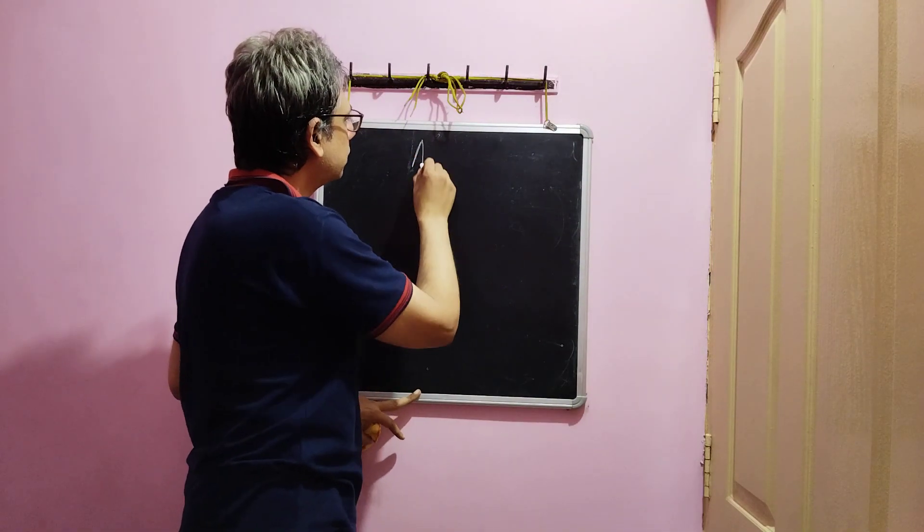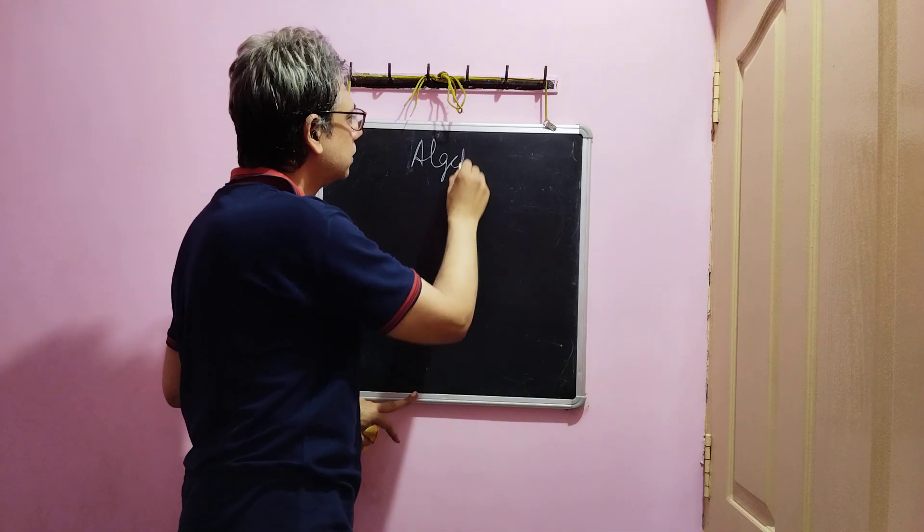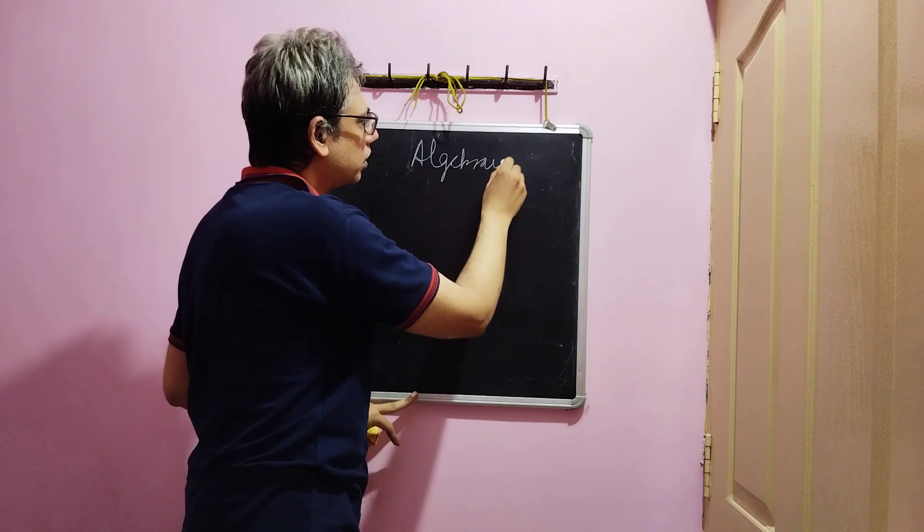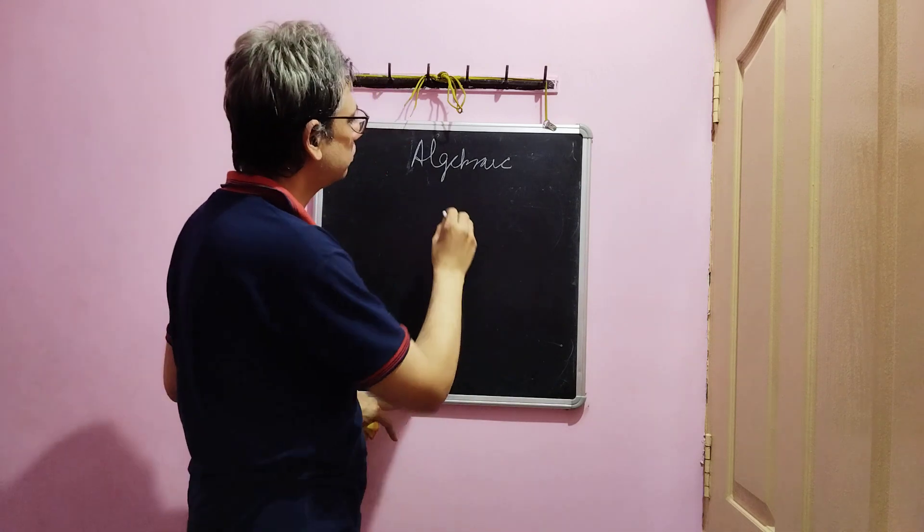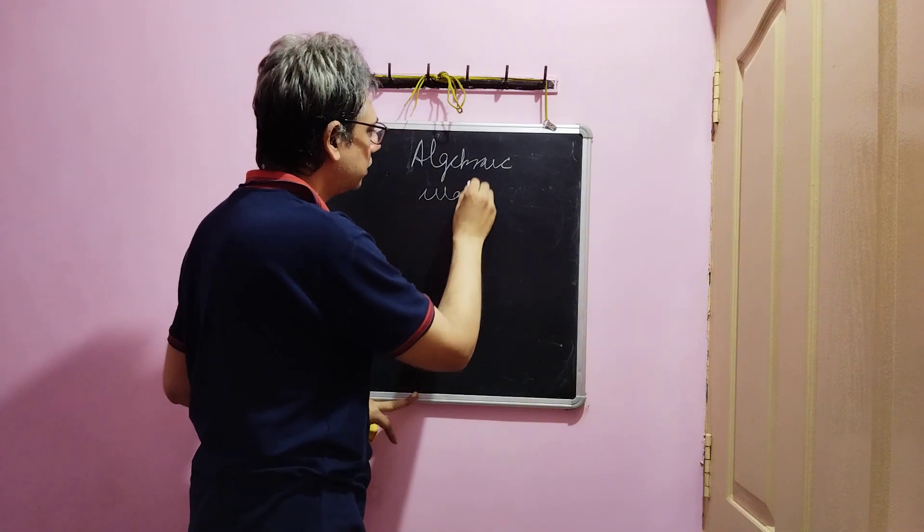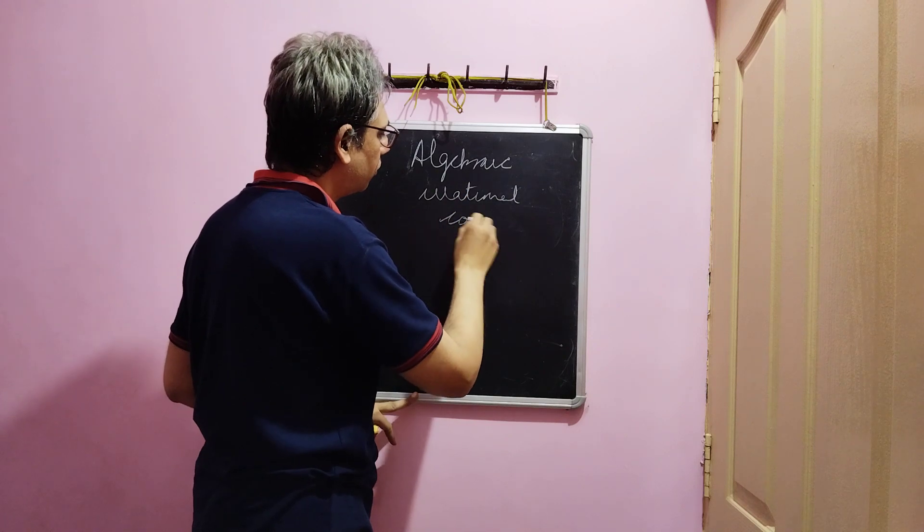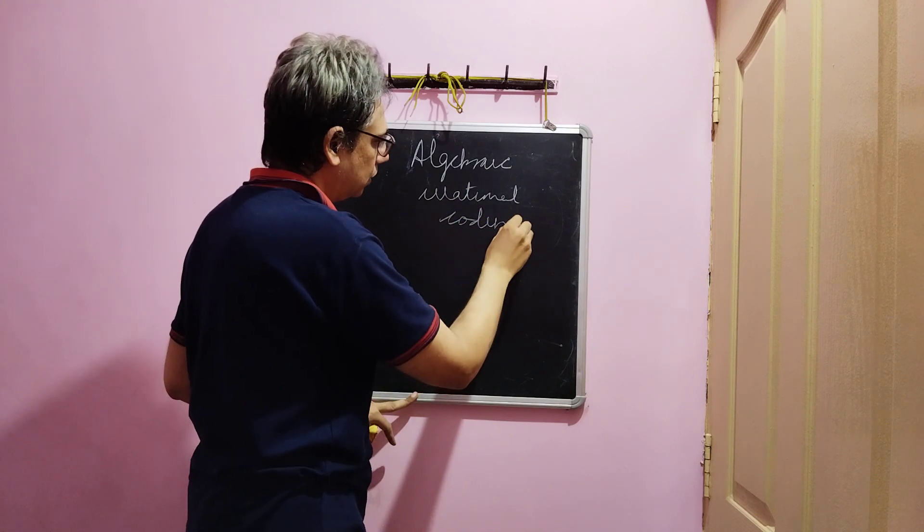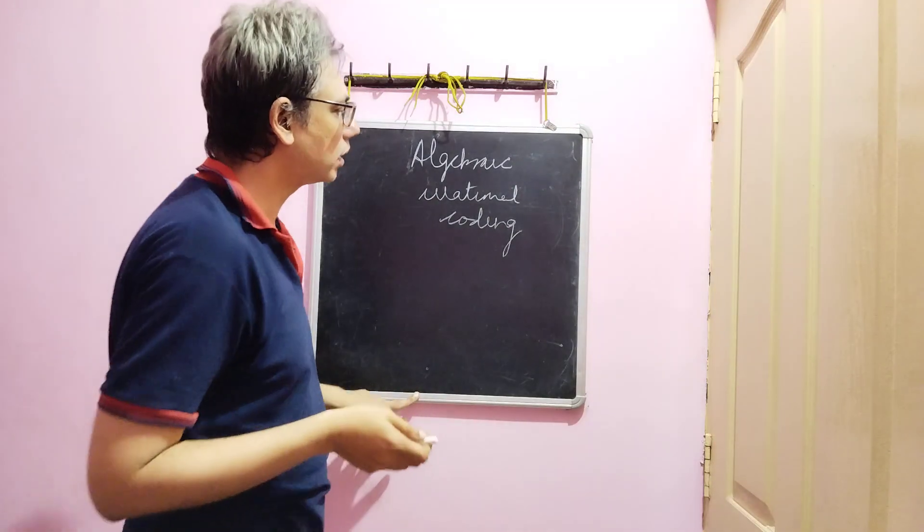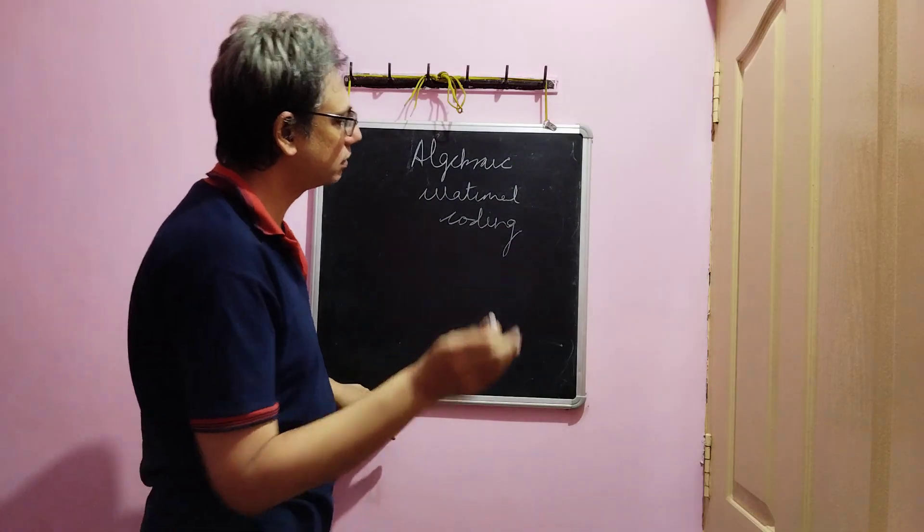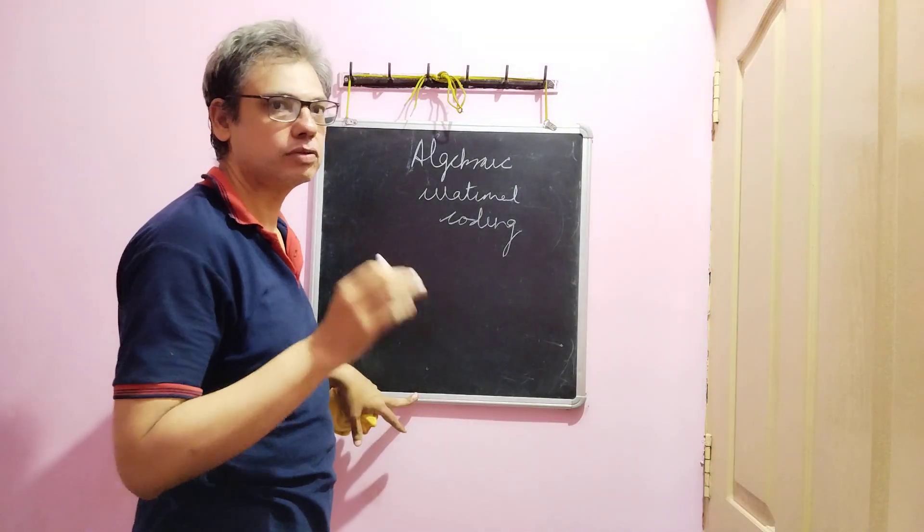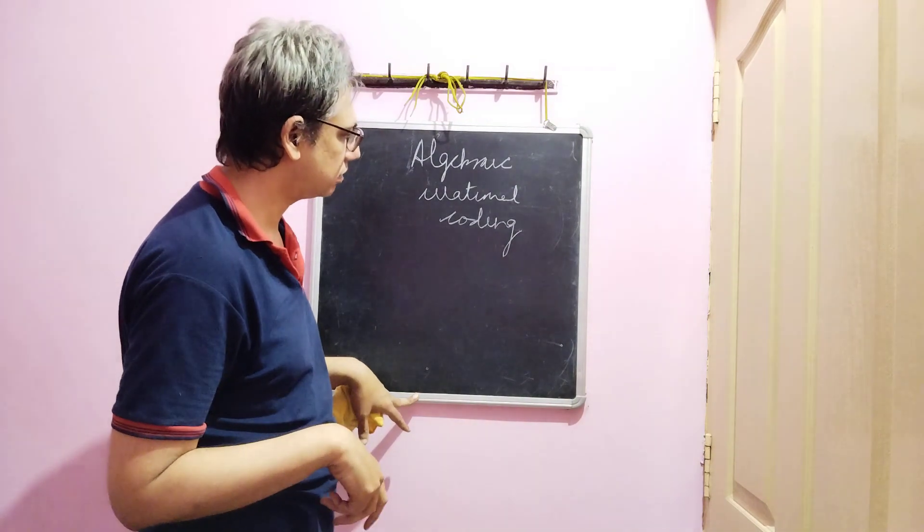We now look at a form of coding that is basically lossless coding, compression coding of information, which is algebraic irrational coding. This form of coding makes use of the fact that the value of root 2 has an endless decimal expansion, although we are only interested in the binary expansion.